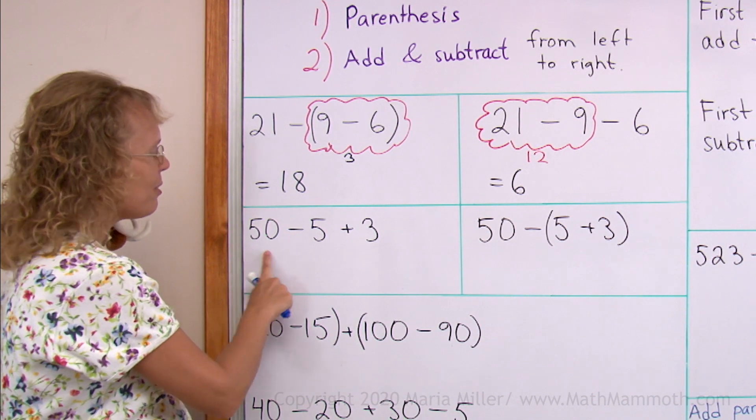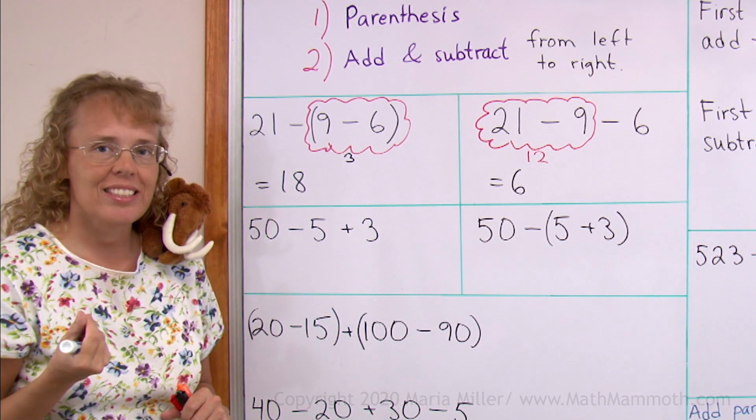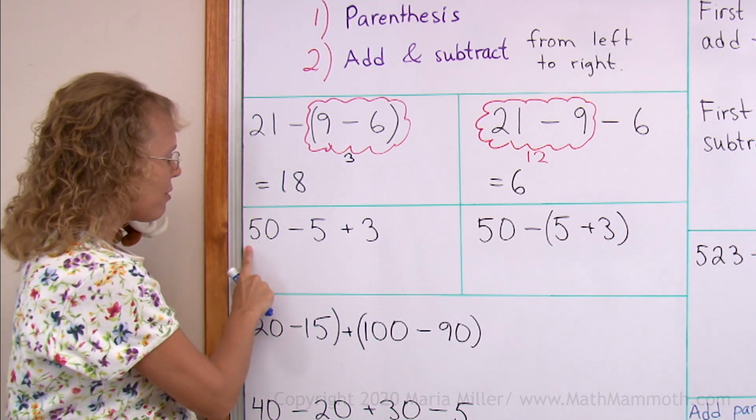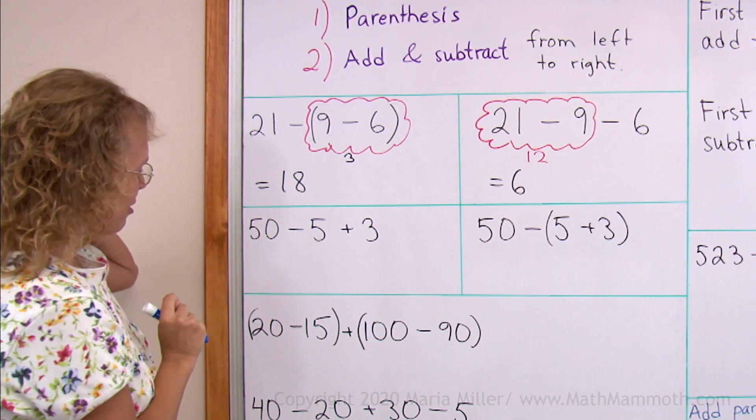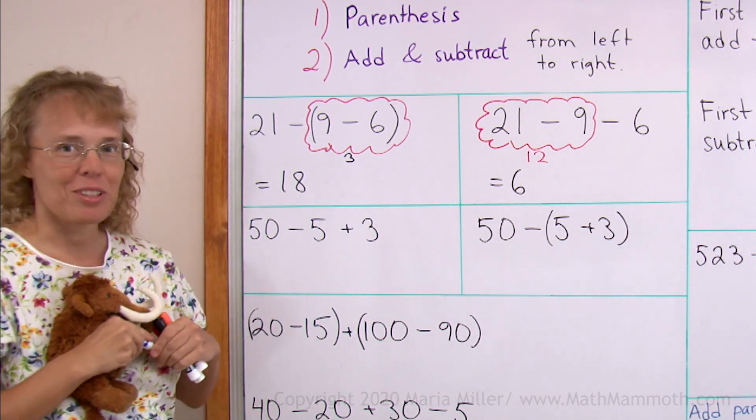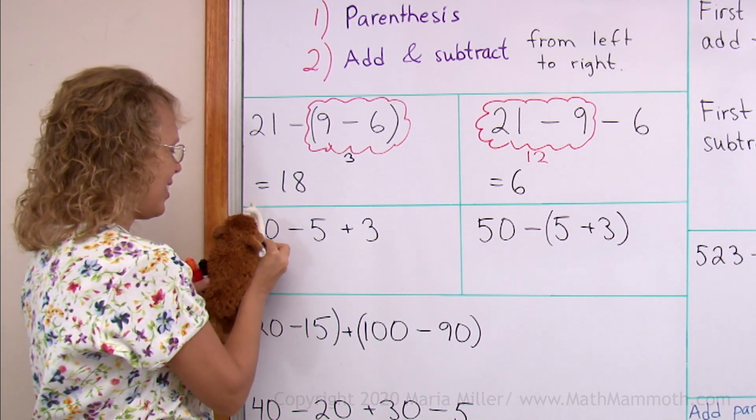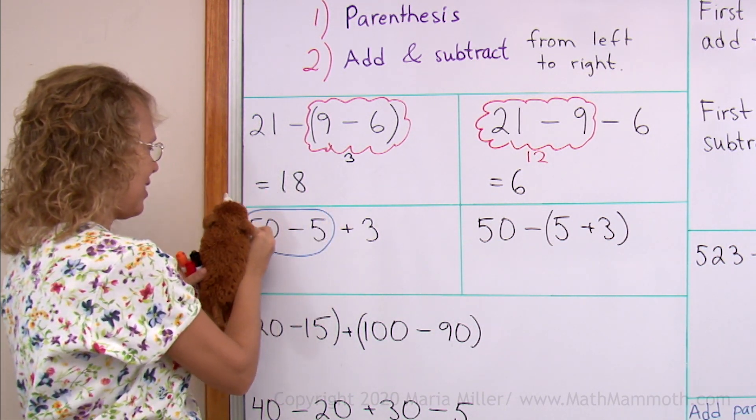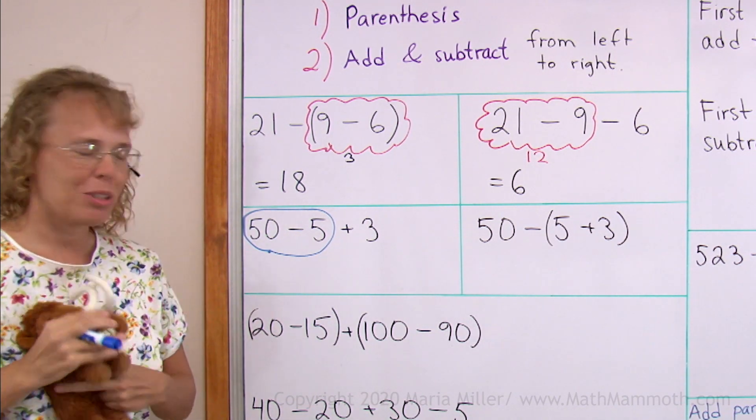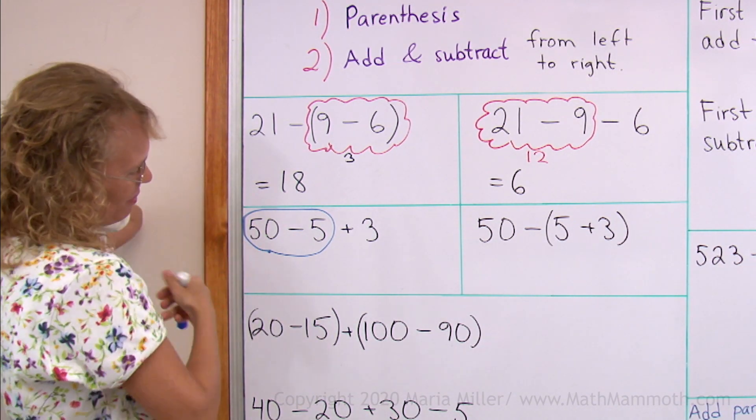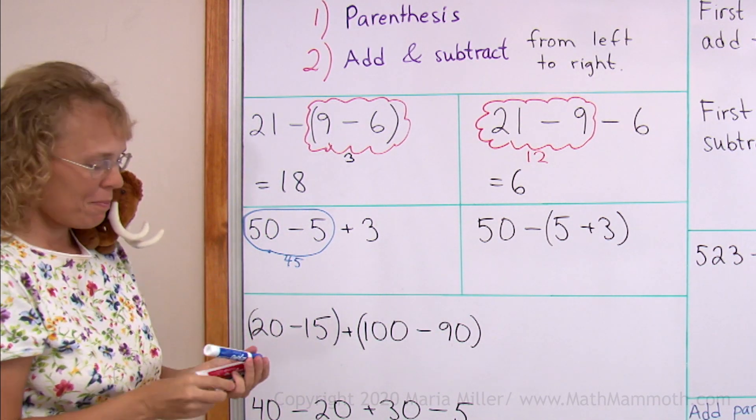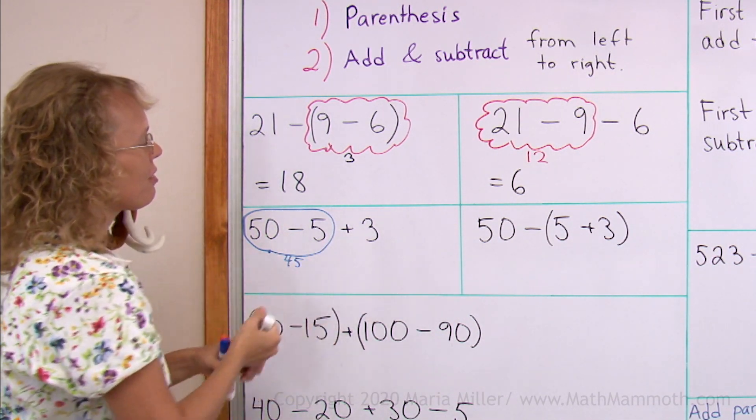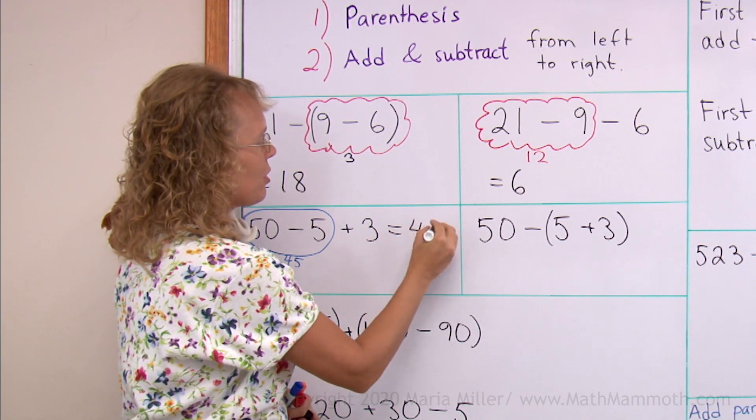Again, over here, there are no parentheses. So we start from left, and we find our first operation right there. Matthew, you want to draw a balloon this time? There, that's what we do first, 50 minus 5. And that is 45. And then you go on, 45 plus 3, which is 48.